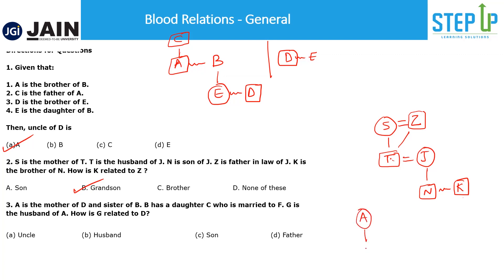Next question: A is the mother of D and sister of B. B has a daughter C who is married to F — so C is female and F is male. G is the husband of A. The question asks how G is related to D. Since A is the mother of D and G is the husband of A, G is simply D's father. Very easy — if the question were reversed asking how D relates to G, we couldn't specify son or daughter, but here we can say father.